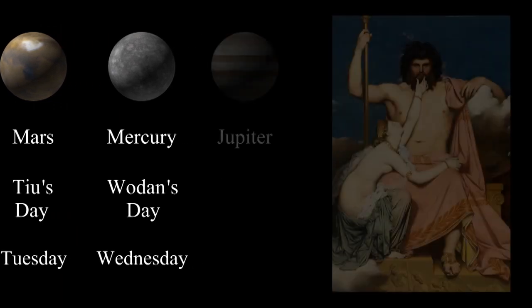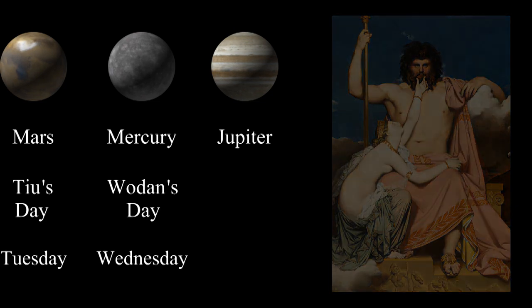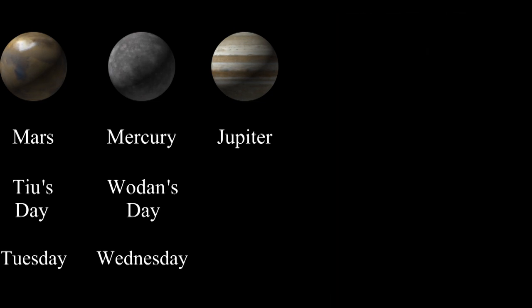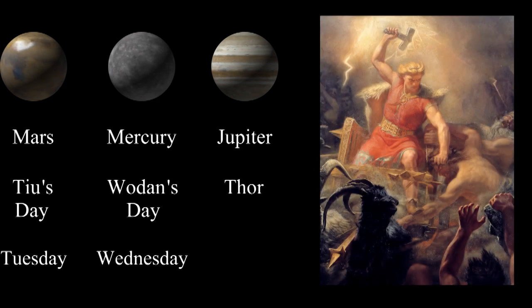Thursday comes from Jupiter. Jupiter likes to shoot lightning bolts down from the sky, and another god who likes to shoot lightning bolts is Thor. Thor's day became Thursday.